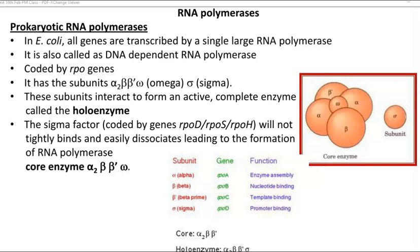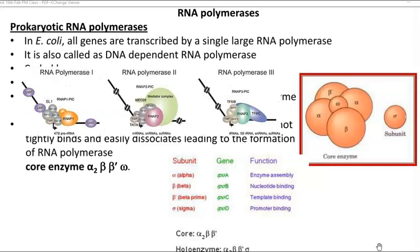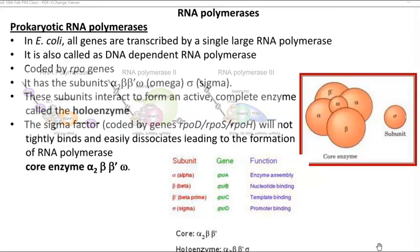In this video lecture we are going to see the explanation related to RNA polymerases. There is some small difference existing between the polymerases of prokaryotes and eukaryotes. In prokaryotes it is only a single RNA polymerase that performs the transcription, whereas three different types of RNA polymerase exist in eukaryotic organisms.